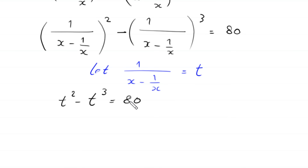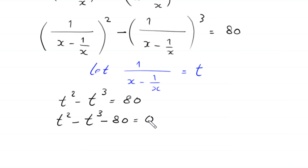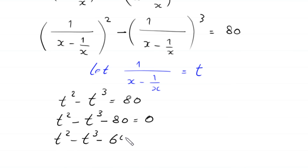With the substitution t = x - 1/x, the equation becomes t² minus t³ equal to 80. Moving 80 to the left-hand side gives t² minus t³ minus 80 equal to 0.